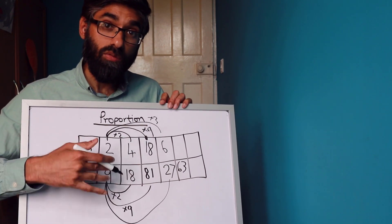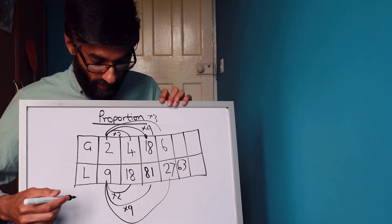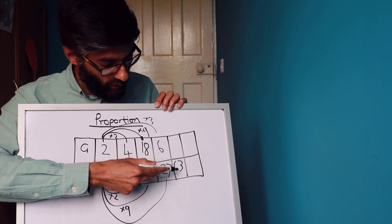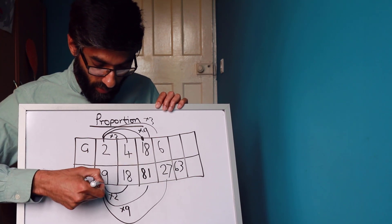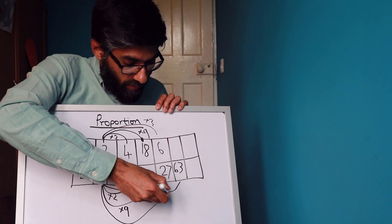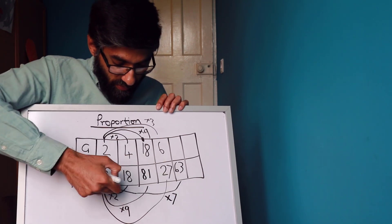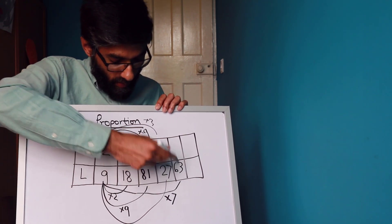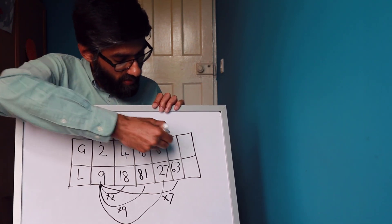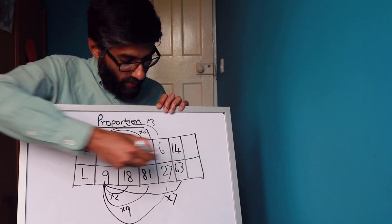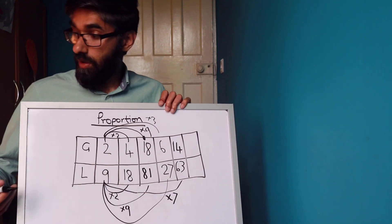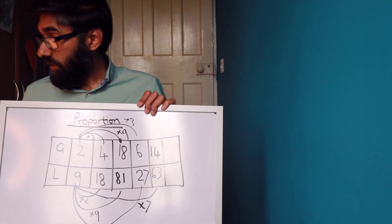For the final entry, from 9 liters to 63 liters: times nine by seven gives 63. So we multiply the gallons by seven: two times seven is 14 gallons. That's how you use ratio tables to find missing proportion values.